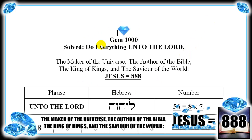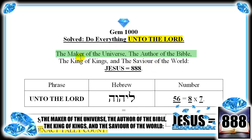Gem 1000: do everything unto the Lord. This occurs countless times throughout the Hebrew Scriptures, as everything from worship, to service, to work, to buildings, to plans, to people — all things unto the Lord. The maker of the universe, the author of the Bible, the king of kings, and the savior of the world: Jesus equals 888.